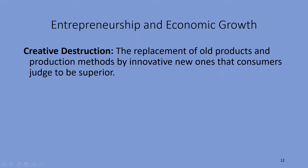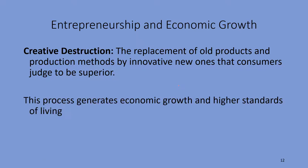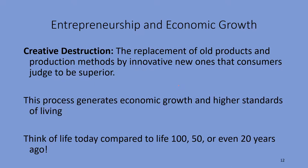This term was coined by an Austrian economist who studied and did his work at Harvard, by the name of Joseph Schumpeter — kind of an interesting guy. He said he had three main goals in his life: to be the best economist in the world, the best horseman in Austria, and the best lover in Vienna. He said he accomplished two out of three of those goals, but never said which ones. The important thing about this process of creative destruction is it helps generate economic growth and higher standards of living for a lot of people, especially when it's happening through voluntary exchange.